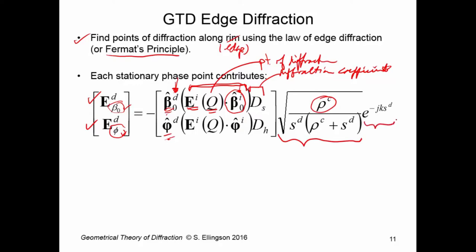You also see the expected geometrical optics phase factor — simply the phase accrued by traveling a distance from the point of diffraction to the field point. The key observation is that this formulation is very much a geometrical optics field: incident field times some coefficient times a spread factor times a phase factor. So GTD edge diffraction is in the GO form, but the coefficients are different and we must be careful about the coordinate system.